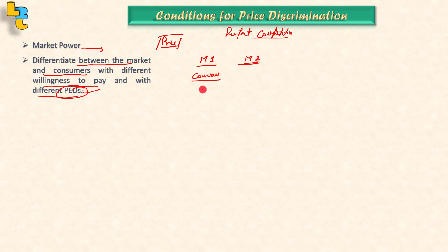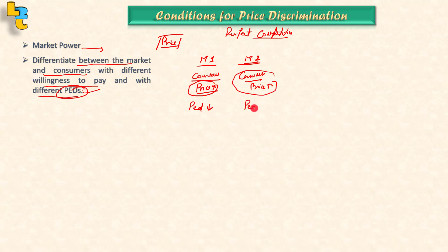If a consumer is highly willing to pay, the price elasticity of demand will be low. If the seller charges a higher price and the consumer still buys, that means price elasticity of demand is less. If the seller charges more and the consumer reduces purchases, then price elasticity of demand is higher.